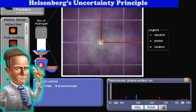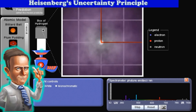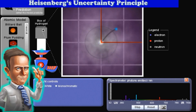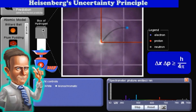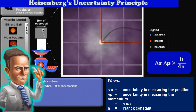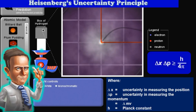According to Heisenberg's uncertainty principle, it is impossible to know simultaneously both the momentum P, defined as mass times velocity, and the position of a particle with certainty. Heisenberg stated this mathematically, where delta X is equal to the uncertainty in measuring the position, delta P is equal to the uncertainty in measuring the momentum, and h is equal to Planck's constant.